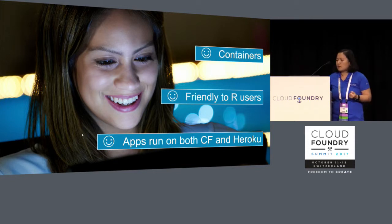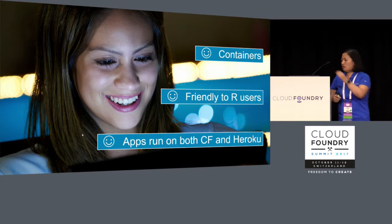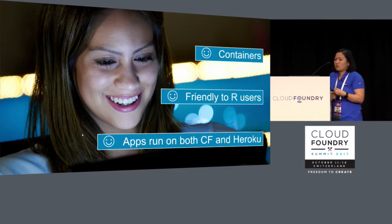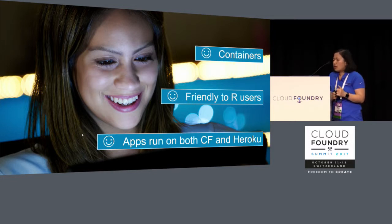Some of the benefits of using a customized R buildpack — and not necessarily just R, but customized buildpacks in general — they are designed for containers, so you could easily move apps to the Cloud Foundry environment. It's friendly to R users; at least half of data scientists use R for programming and data analytics. They don't need to talk to developers — they could just figure out how to push the app to Cloud Foundry themselves. And since the buildpack I showed is designed for containers, not just for Cloud Foundry but also for Heroku, the chance that these data science apps could run in both environments is good.